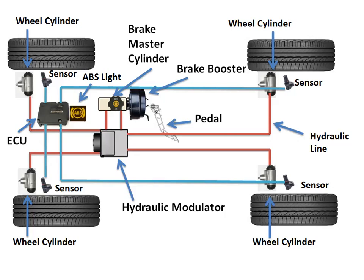Sensors on each wheel detect locking — when a wheel stops moving and starts to skid. There are four sensors provided by the ABS system, one on each wheel. The sensor detects whether the wheels are locking up and sends data back to the ECU — the engine control unit. The ECU, acting like a brain, decides whether to continuously supply hydraulic fluid pressure to the wheel cylinders or calipers. When a lock-up is detected, ABS pumps the brakes 100 times per second.